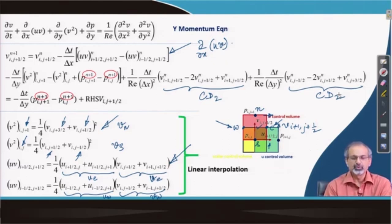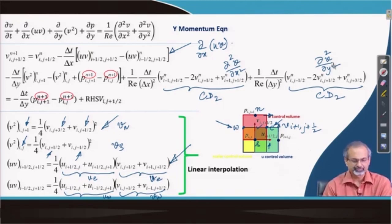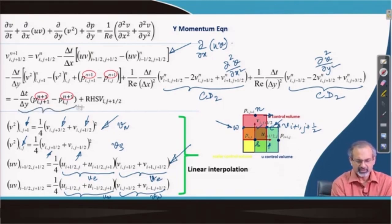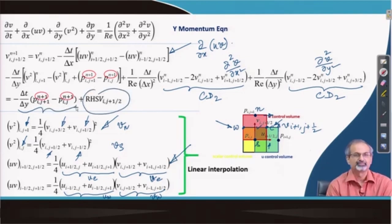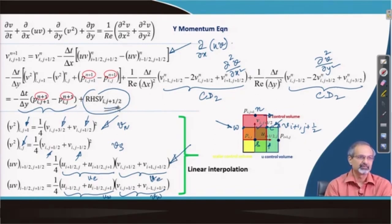For the viscous terms, you sweep along the x direction to work out ∂²v/∂x² and sweep along the y direction to find ∂²v/∂y², and so on. At the end, the pressure term along with the source term is assigned for the particular cell, giving the right-hand side of the v control volume centered around i, j+1/2.